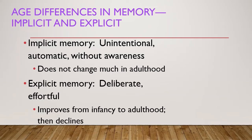Under explicit memory, the characteristics are that it is deliberate and effortful, and thus improves from infancy to adulthood and then declines. Examples of explicit memory include remembering all the items on your shopping list, the birth dates of your friends and family, and remembering the important events from your life.